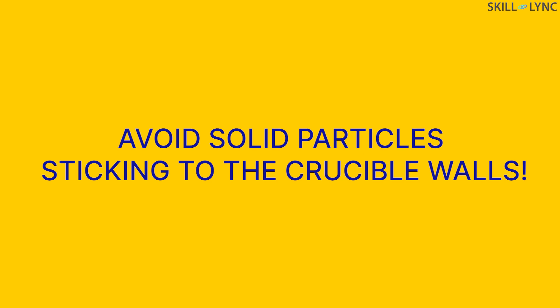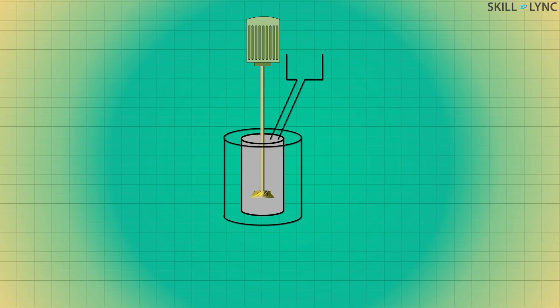Now let's talk about the process. First, the matrix material is placed inside the furnace for melting. This matrix material consists of light metals such as aluminum, magnesium, and titanium.